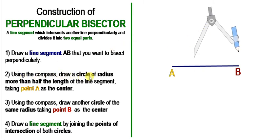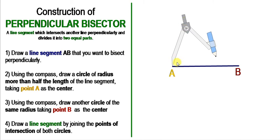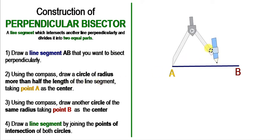Using the compass, draw a circle of radius more than half the length of the line segment, taking point A as the center. The center should be at point A, and the radius must be more than half the length of the line segment that we want to bisect.